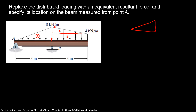So here I have A, B, and B'. I know my height is 8 kN/m and my point A is 0. So my area 1, that I'm gonna call load 1, is equal to our base — that's 3 — times our height — that's 8 — over 2. That's the area of the triangle. So our load 1 is equal to 12 kN.